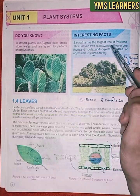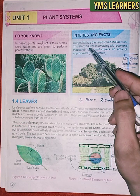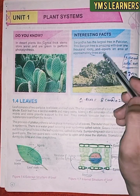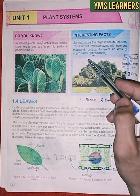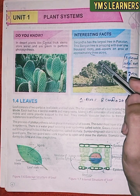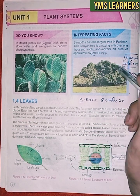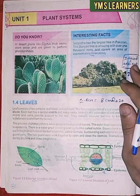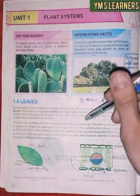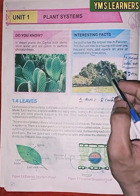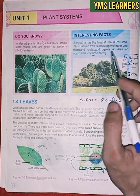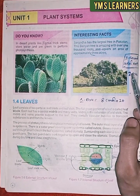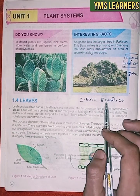Sargodha has the largest banyan tree in Pakistan. This banyan tree is amazing with over 1000 roots and covers an area of approximately 3 acres.